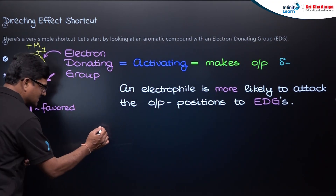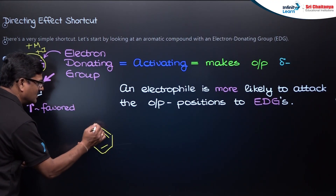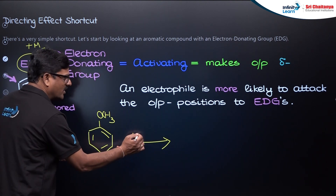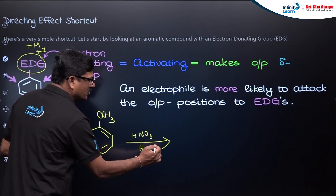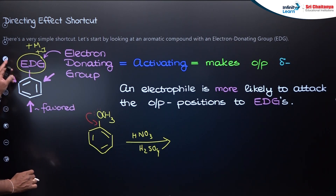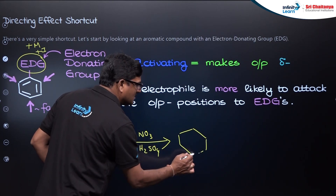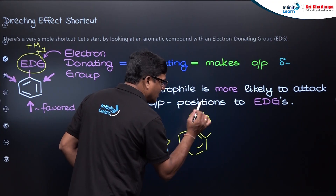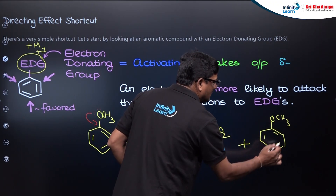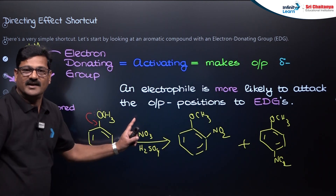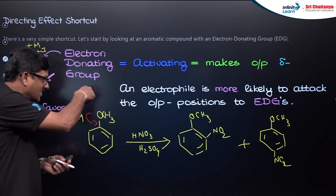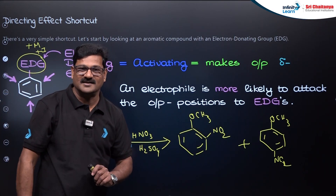For example, take phenol or anisole. When it is treated with HNO₃ and H₂SO₄ for nitration, there is ring activation by means of a positive mesomeric effect. Therefore, the products obtained are the ortho and para products. The OCH₃ group of anisole has a positive mesomeric effect, releasing electrons onto the benzene ring, making it an ortho and para director.